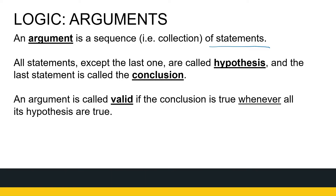If I have an argument, all my statements except the last one are called the hypotheses. So I'm saying: this happens, this happens, this happens — therefore I can conclude that this is true. All the statements except the last one are the hypotheses, and that last statement is the conclusion. An argument is called valid if the conclusion is true whenever all the hypotheses are true.